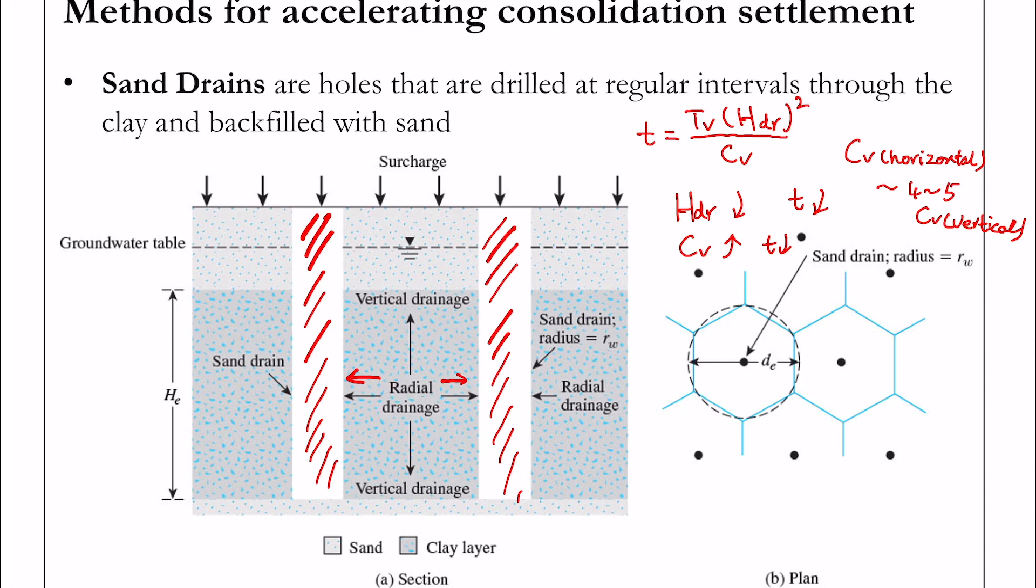On the bottom right here is a typical plan for sand drains installation, where R_w is the radius of sand drains, and d_E is the diameter of the effective zone size. The time it takes for clay to consolidate with sand drains is a function of the drainage path, the coefficient of consolidation.